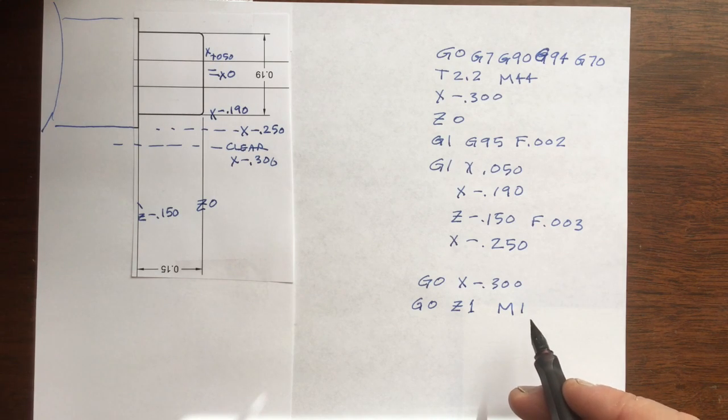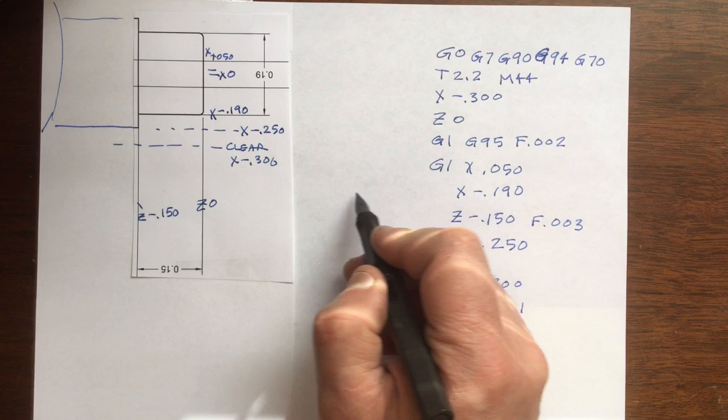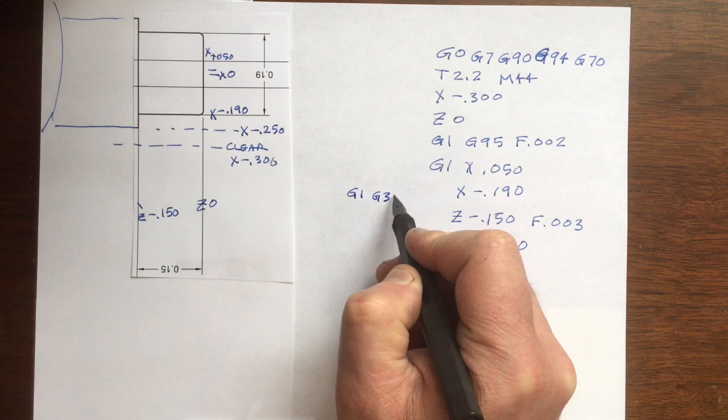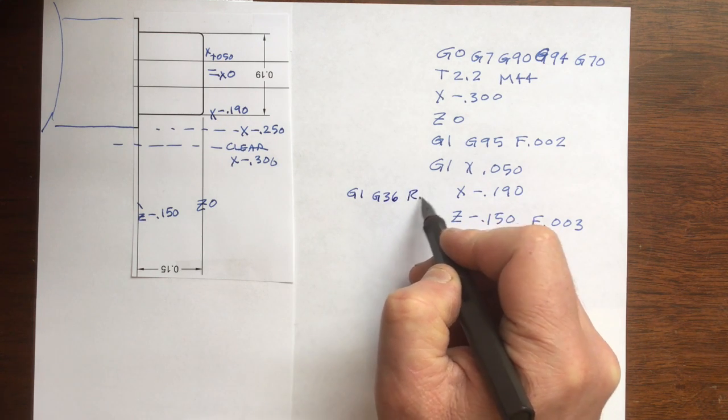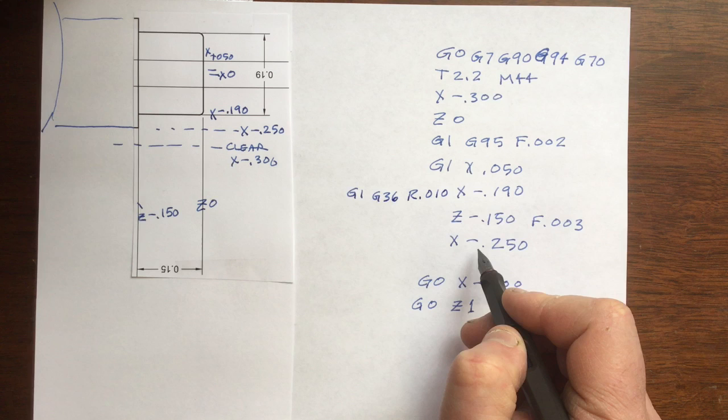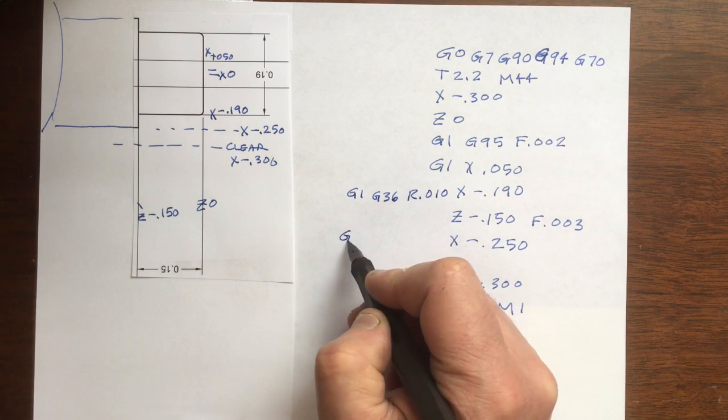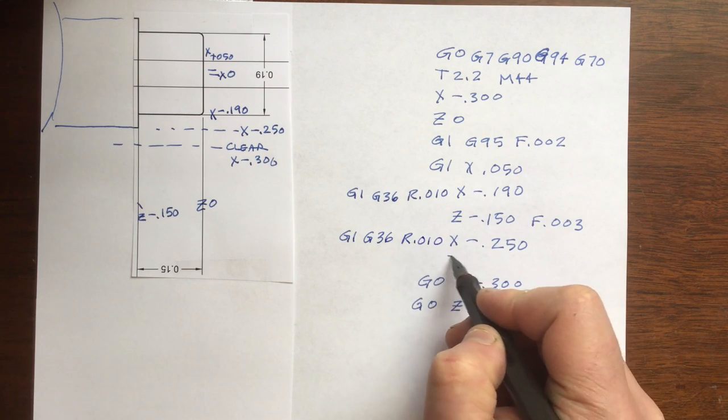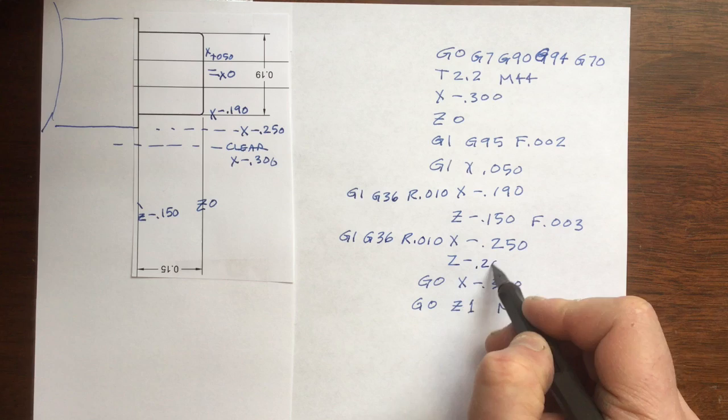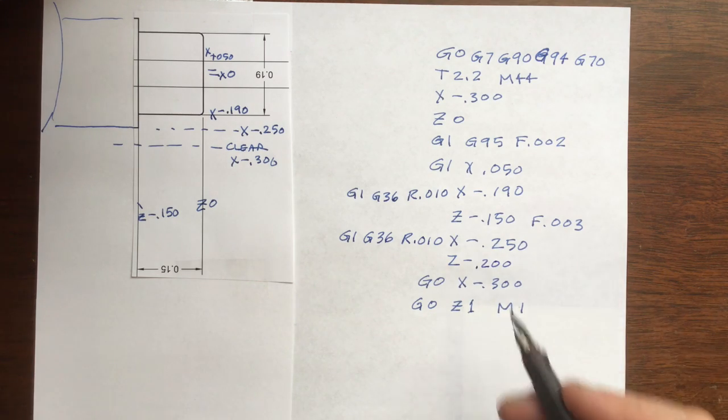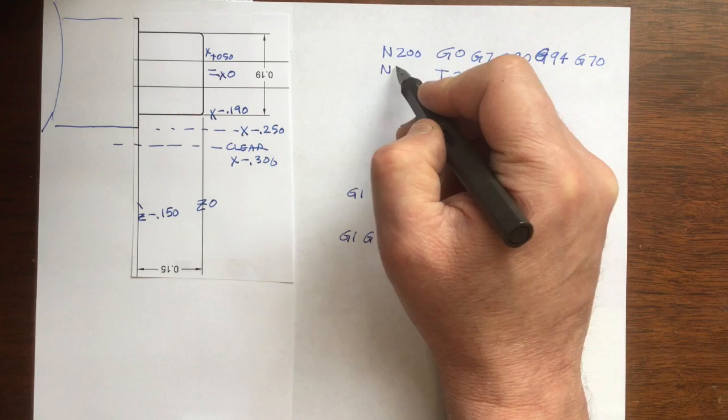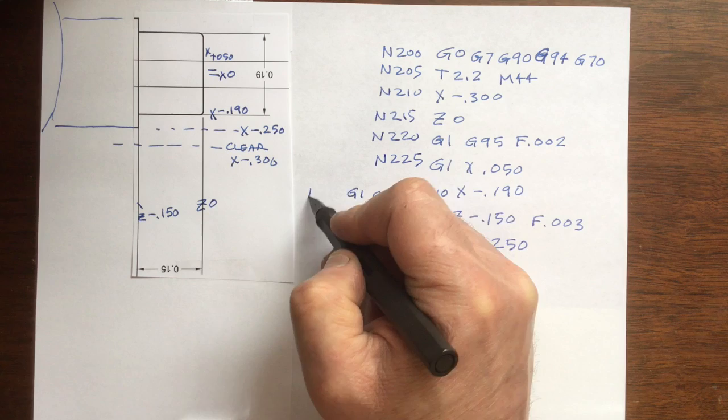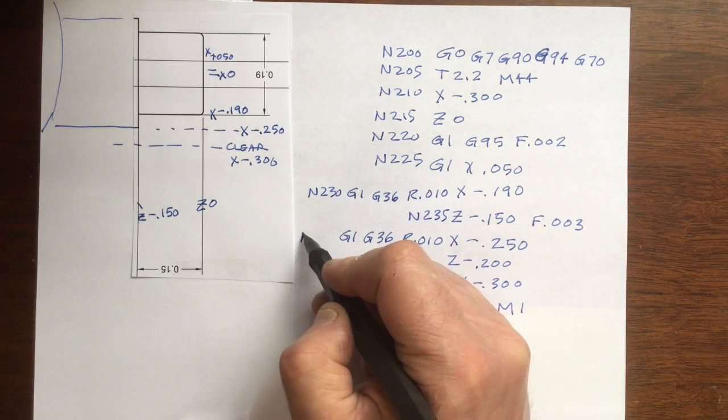Let's use G36 to put an automatic radius between two moves. G1 and G36 of 10 thousandths of an inch will link this move to the next move with a 10 thousandths radius. Similarly, let's do the stock diameter. We didn't have a move to link that last G36 to, so I'll add it going Z minus 200 thousandths. The Fagor 8025 requires line numbers, so I'm putting them in starting at line N200 and incrementing by five.